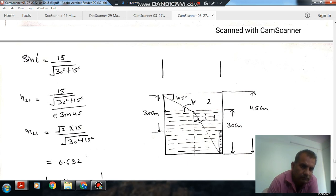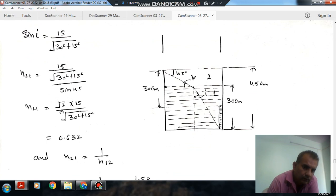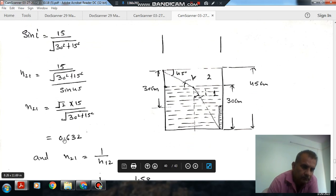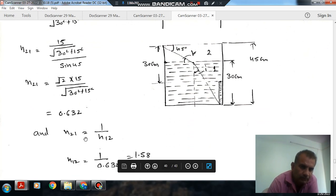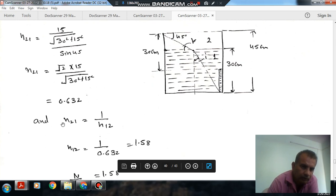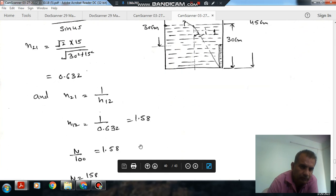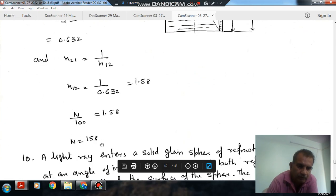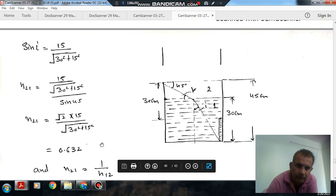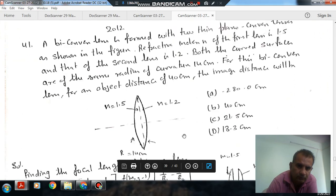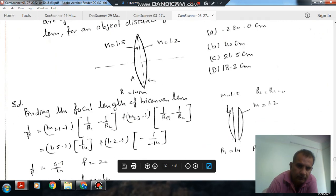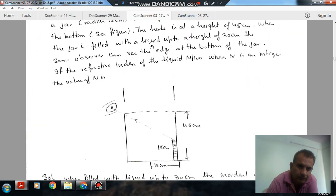Putting these values, we can find out n21 that comes out as 0.632. Because n21 equals 1 by n12, so n12 comes out as 1.58, and it is given as n by 100, so n will be obtained as 158. So the answer is 158.